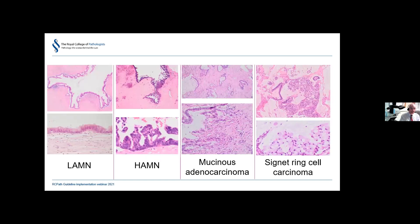Here are some images to illustrate. In the left-hand column you can see a low-grade appendiceal mucinous neoplasm at low and high power. At low power, you can see tongues of pushing invasion producing diverticular-like structures. At high power, this is low-grade — often in LAMNs the dysplasia is so low-grade it scarcely looks dysplastic at all.